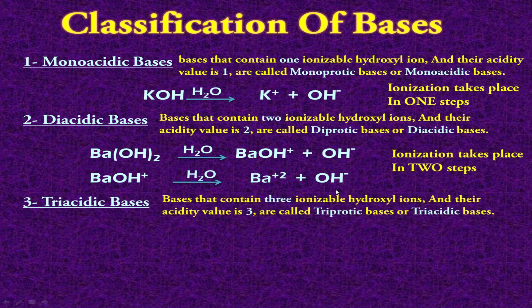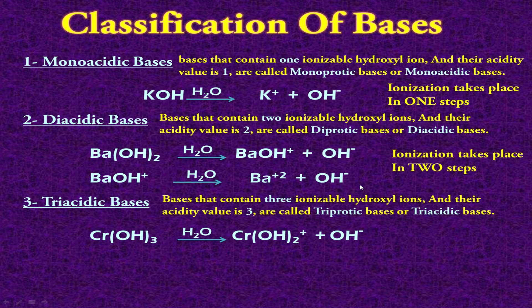The third type of bases is called triacidic bases. These contain 3 ionizable hydroxyl ions and their acidity value is 3, so they are called triprotic or triacidic bases. An example is chromium hydroxide — since the valency of chromium is plus 3, three OH groups attach to it, giving the formula Cr(OH)₃. In the first step, out of 3 hydroxyl ions, only 1 is removed and 2 remain attached with chromium, giving the radical a plus charge.